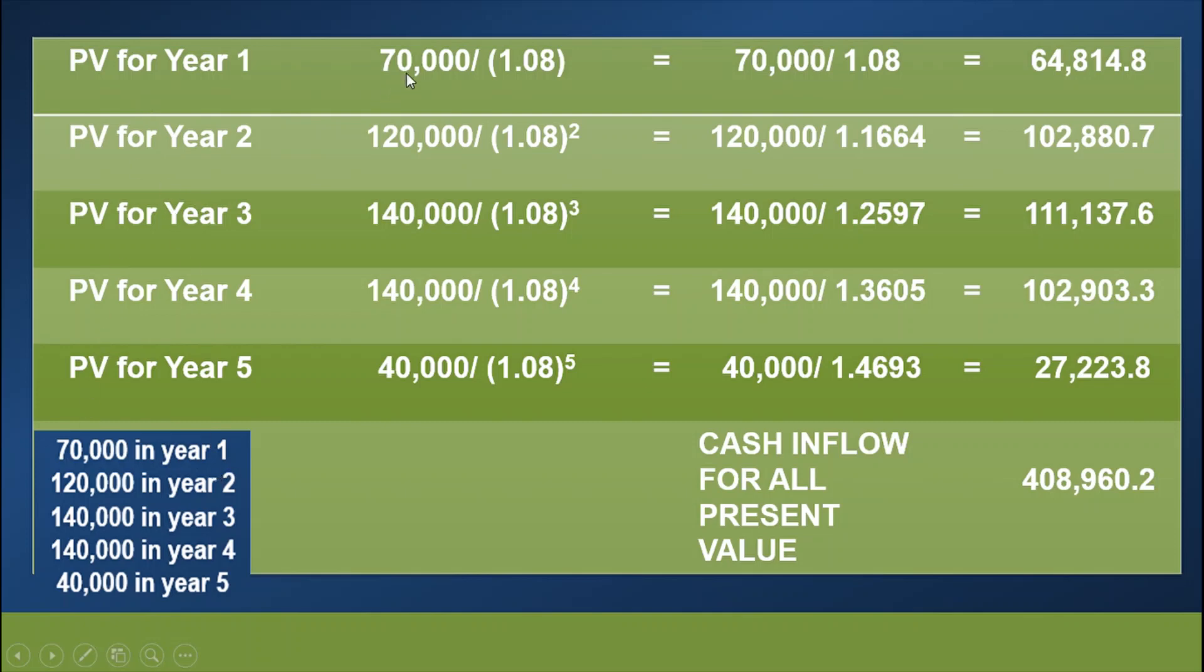So let's start. Year 1, 70,000 divided by 1.08. How do we get this 1.08? 1 is our constant from our formula, and 0.08 here is our opportunity cost or rate per annum. So 70,000 divided by 1.08, that would give us 64,814.80. That is our computation for year 1.